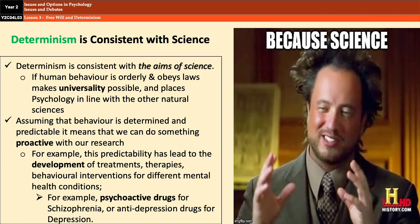A strength of determinism is that it is consistent with the aims of science. The idea that human behavior is orderly, predictable, and obeys laws places psychology on equal footing with the other natural sciences. In addition, the idea that human behavior is predictable and can be controlled has led to the development of treatments, therapies, and interventions that have benefited millions of people. For example, the development of drug treatments for mental health disorders like depression and schizophrenia has come about due to the belief that human behavior is predetermined, predictable, and can be controlled. The mere existence of conditions like schizophrenia, where people experience a loss of control over thoughts and behavior, would also cast doubt on the idea of free will — because who would choose to experience those things?